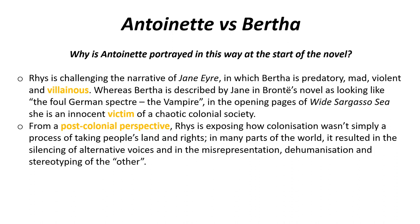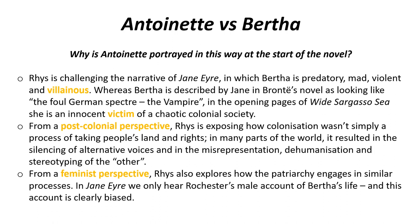From a post-colonial perspective, Rhys is exposing how colonisation wasn't simply a process of taking people's land and their rights. In many parts of the world it resulted in the silencing of alternative voices — the voices of the colonised people and anyone who was between two cultures. We remember that Antoinette is described as a Creole in the novel. There's also the misrepresentation, the dehumanising, and the stereotyping of the other. At the start of the novel, Antoinette is looking at the characters around her — Christophine, for example — trying to discover their real story: what is their voice, what is their narrative, and how can that challenge the almost monolithic narrative of the colonising powers? Antoinette tries to discover this through Christophine and also through her friend Tia, who we meet in the first part of the novel.